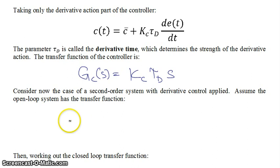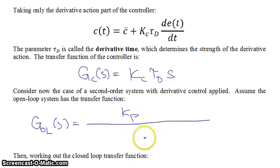So for a second-order system, your open-loop transfer function in standard form is going to look like this: kp in the numerator divided by tau n squared s squared plus 2 tau n zeta s plus 1.